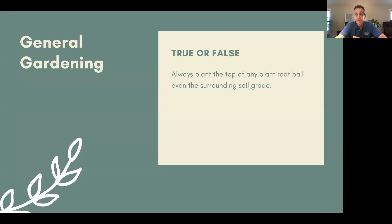True or false: Always plant the top of any plant root ball even with the surrounding soil grade. Generally speaking, that is true — but anytime you see the word 'always' in a true-false question, that should be a tip-off. There are exceptions for planting both lower and higher. Things like clematis, tree peonies, and grafted roses should be planted one to two inches below the grade at which they were growing in the pot.